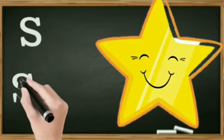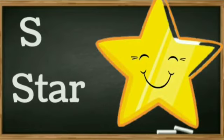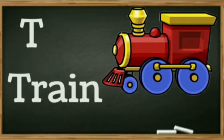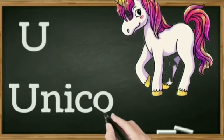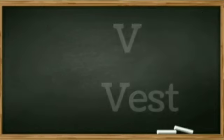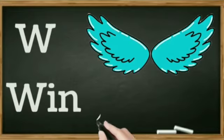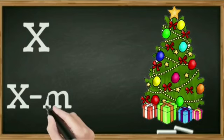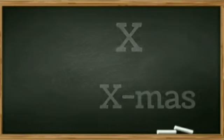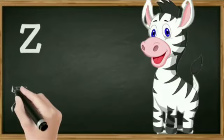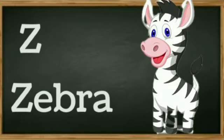S for star. T for train. U for unicorn. V for vest. W for wings. X for Xmas. Y for yo-yo. Z for zebra. Bye-bye kids!